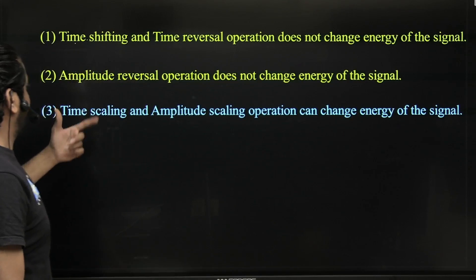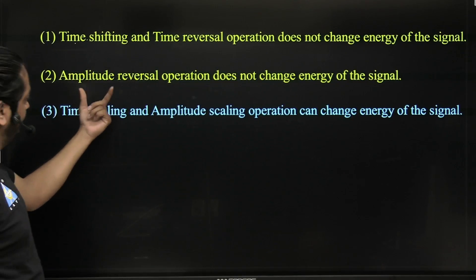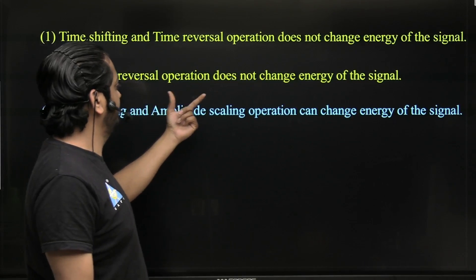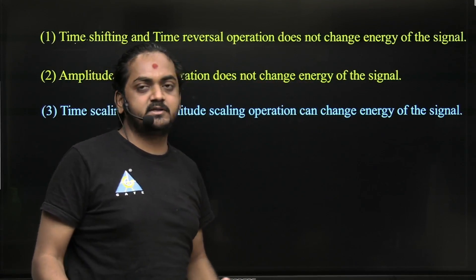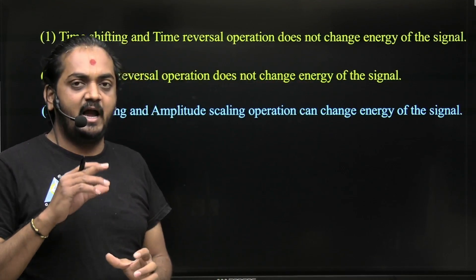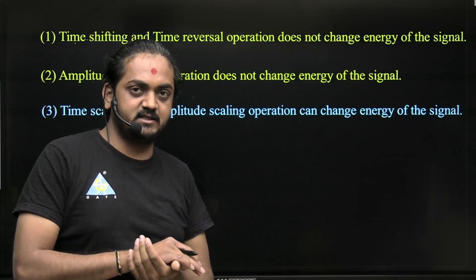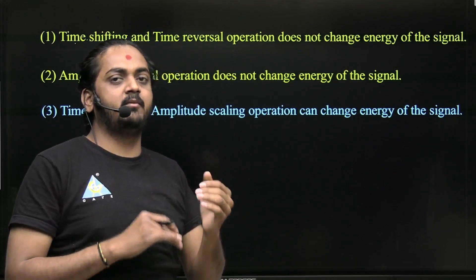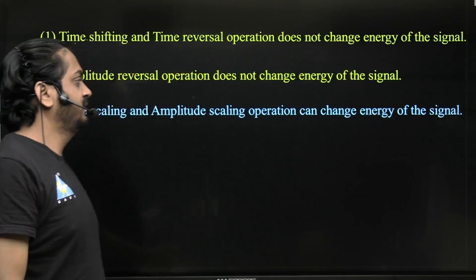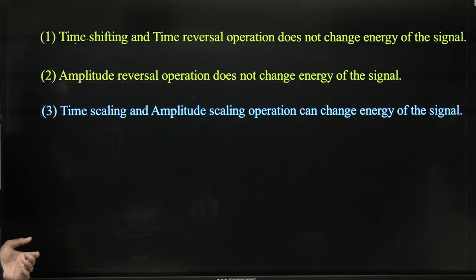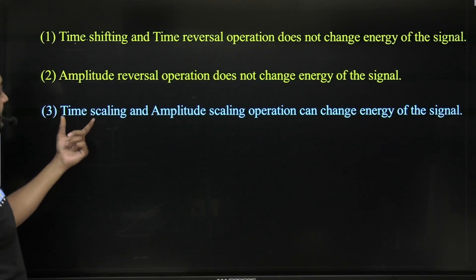Second statement: amplitude reversal operation does not change energy of the signal. Amplitude reversal means folding with respect to the x-axis — positive amplitude becomes negative amplitude — that's why there is no change in energy.